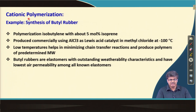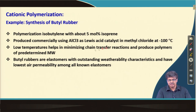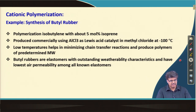One important example of cationic polymerization is butyl rubber, where isobutylene is copolymerized with 5% isoprene using AlCl₃ as catalyst at −100°C. The low temperature minimizes chain transfer reactions and produces polymers of predetermined molecular weight. Butyl rubber is an elastomer with outstanding weatherability and has the lowest air permeability among all known elastomers.